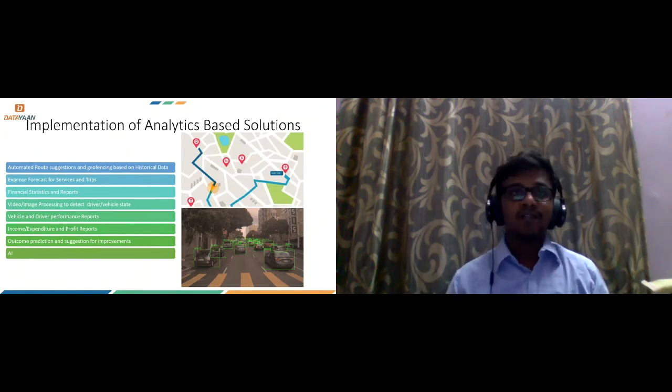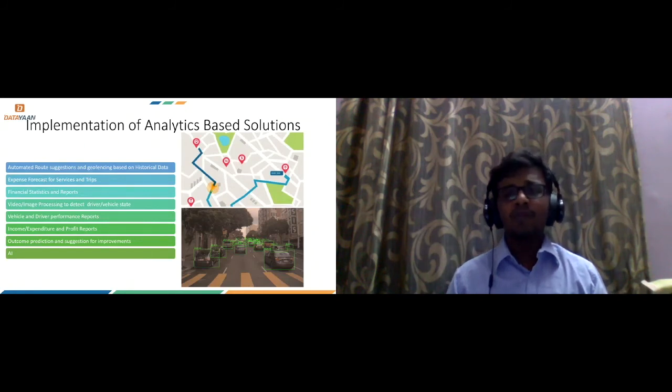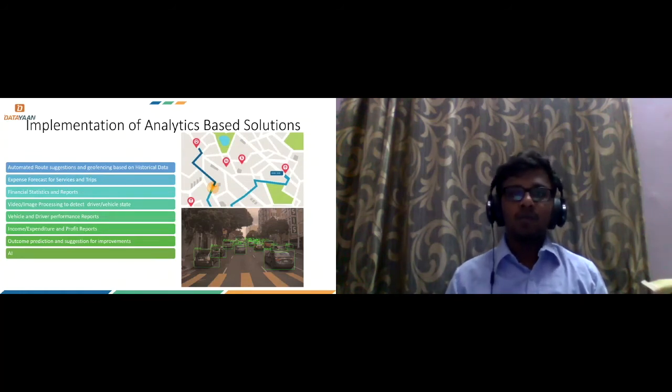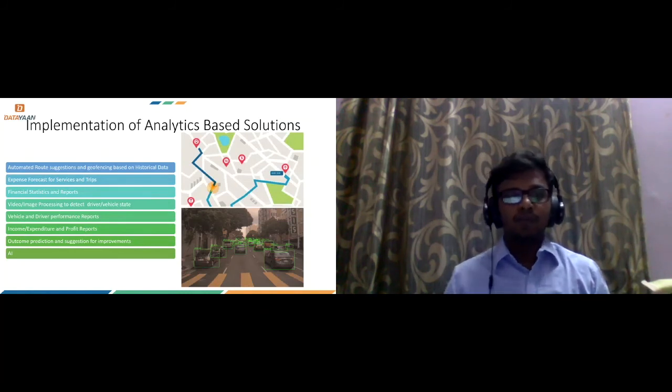And then we give them financial statistics. That is the profit, loss, their forecast of expenses, and what their projected profit or loss will be if they continue with what they are currently doing. And then we do our image processing. We use edge devices that are going to process the video in real time, and it's going to send it back to the server from where we can capture events and any other deviations from the normal. And then we have driver and vehicle performance reports.